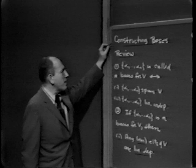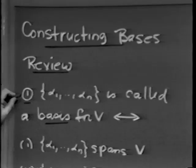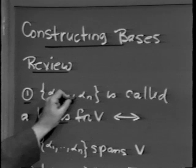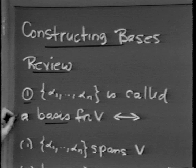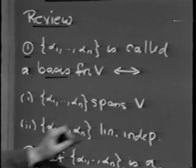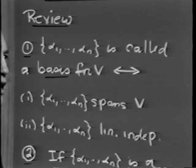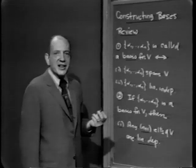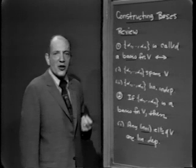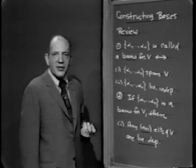Let's go into today's lesson, which I call Constructing Bases. By way of review, given a vector space V with elements alpha 1 up to alpha n, the set of n elements alpha 1 up to alpha n is called a basis for V, provided two things happen: first, the alphas must span V, and secondly, the alphas must be linearly independent. For example, in three-dimensional space, i, j, and k span three-dimensional space and are linearly independent.